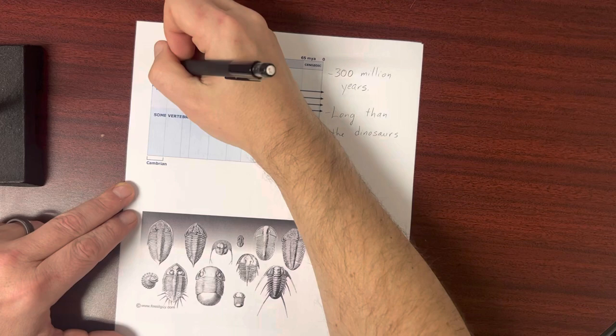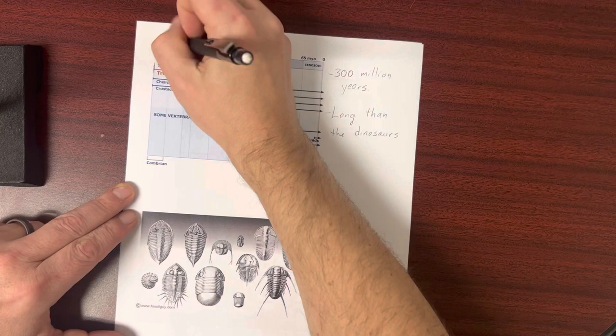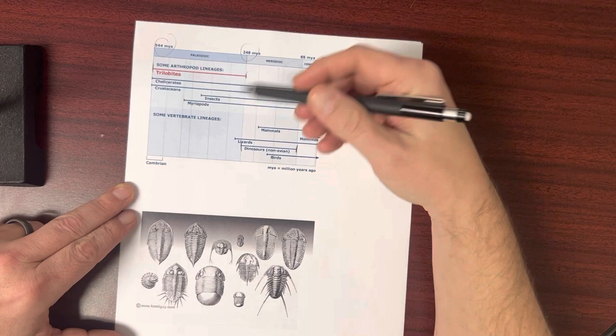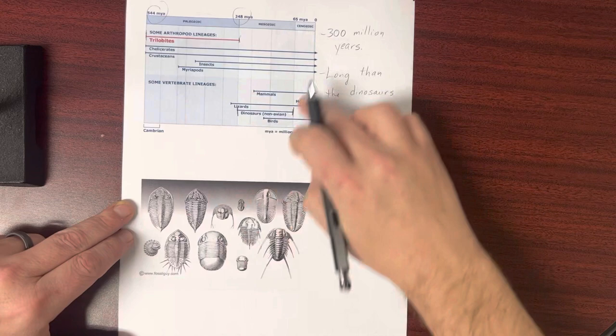You can see from here to here in red shows how long trilobites were around. And down here it shows dinosaurs, which lived for a long time, but not quite as long. And the trilobites were just coming to their extinction when the dinosaurs started to make their appearance. But how do we know this? That's the stuff I want you to think about. How do we know any of this?